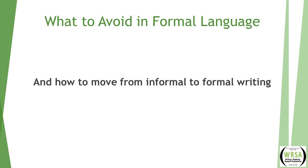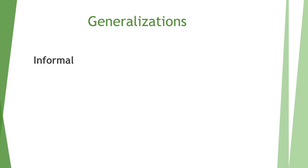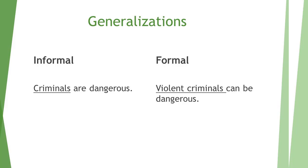We're also going to talk about how to move from informal to formal writing. When writing formally, you want to avoid generalizations — stick with specifics. An example of an informal generalization is saying 'criminals are dangerous.' To move it into formal writing, you would say 'violent criminals can be dangerous,' because it's more specific. There are many kinds of criminals, so we need to include the word 'violent' in a formal context.